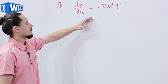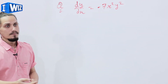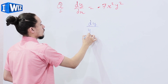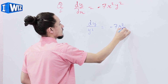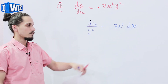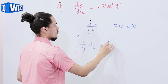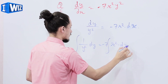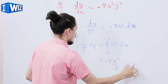For the second example, we have dy/dx = -7x²y². First step, separating the variables: we get dy/y² = -7x²·dx. Integrating both sides, integral of 1/y² dy equals integral of -7x² dx, which gives -7x³/3 + c.